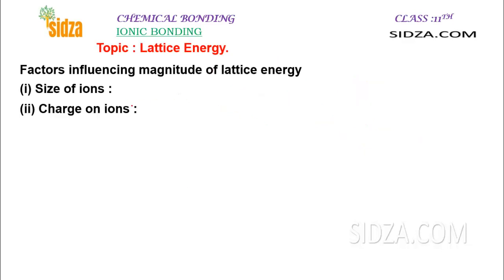Lattice energy depends on two important factors: number one is the size of the ion, and number two is the charge of the ion. Lattice energy is inversely proportional to the size of the ions, but it is directly proportional to the charge of the ion — that means the charge of the cation and the charge of the anion.